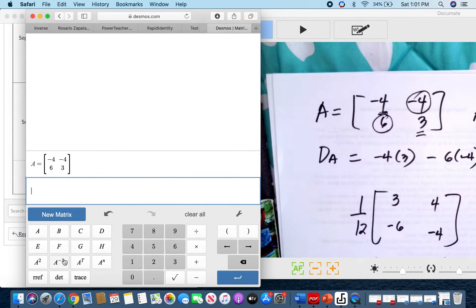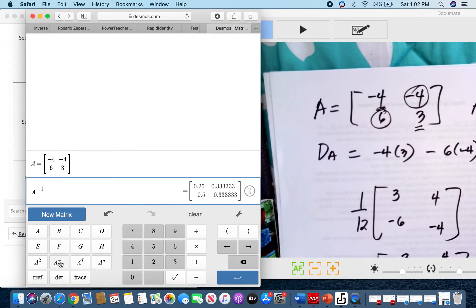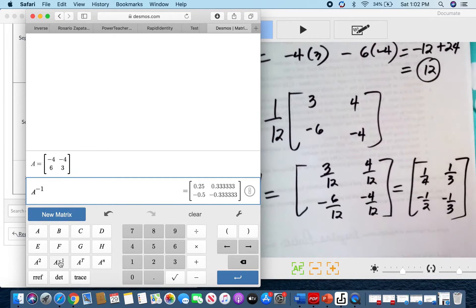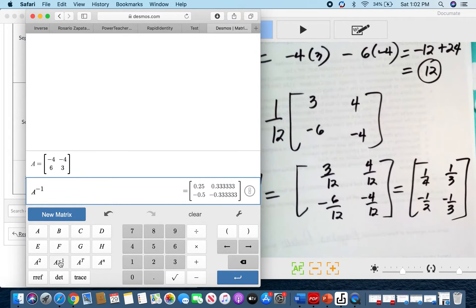And then press A raised to -1. And as you can see, the value of the elements of the inverse matrix are 0.25, which equals 1/4, 0.333, which equals 1/3, -0.5, which equals -1/2, and -0.3 repeating decimal is -1/3.